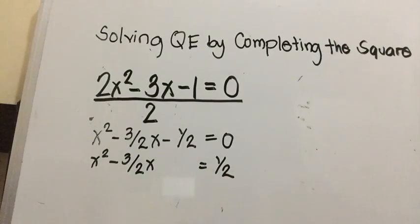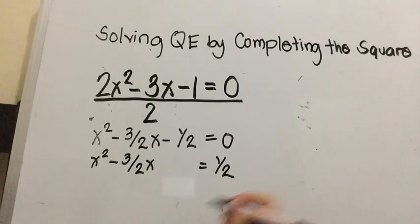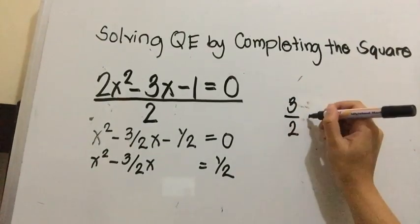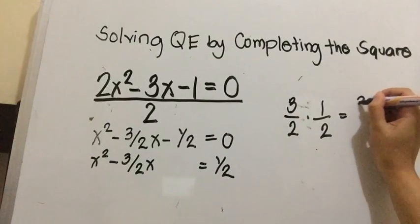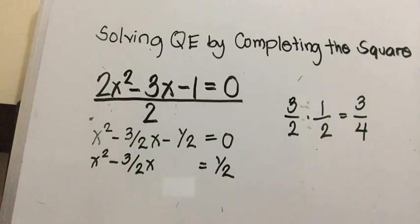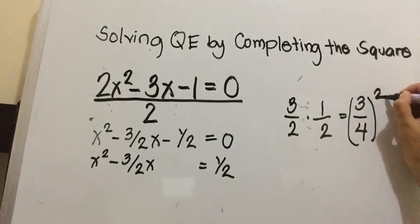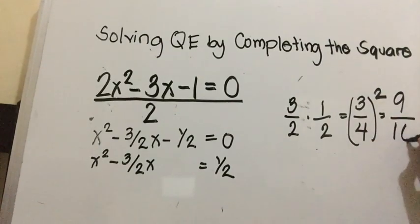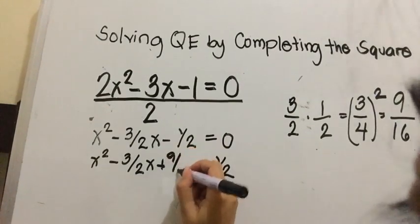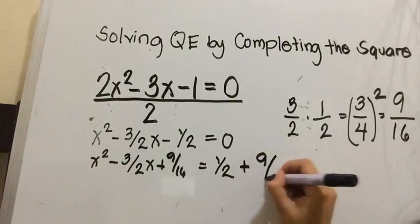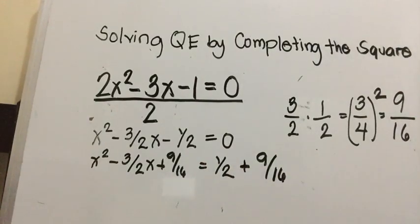The question is how we're going to find the third term. Since it's a fraction, we just multiply the coefficient by 1 half. So 3 over 2 times 1 half equals 3 over 4. Then we square that result: 3 times 3 is 9, and 4 times 4 is 16. So we're going to add 9 over 16 on both sides: plus 9 over 16 on each side.